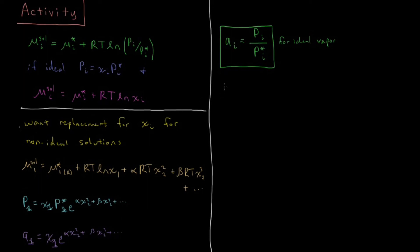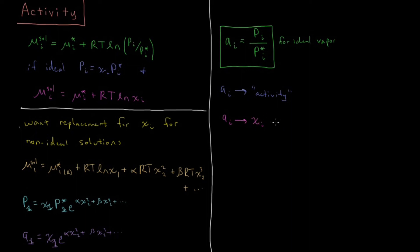So a_i is called the activity of component i, and it functions analogously to mole fraction but for non-ideal solutions. For a given non-ideal solution, the vapor pressure of component i equals the activity times the vapor pressure of the pure liquid. As a limiting result, the activity of a component must approach the mole fraction of that component as the mole fraction of that component approaches one — because all solutions behave ideally in the limit of purity, and Raoult's law is obeyed at very high mole fractions.